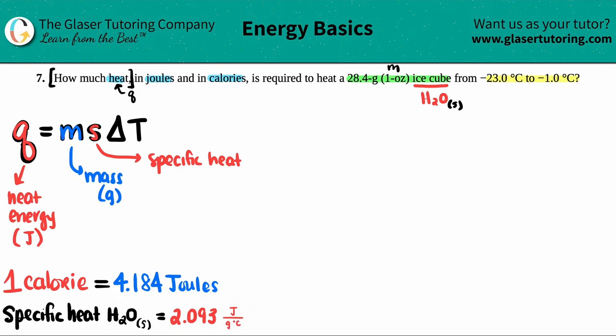The specific heat is in joules per gram times Celsius. So whenever you see a number that has these three units, it's always a specific heat value.